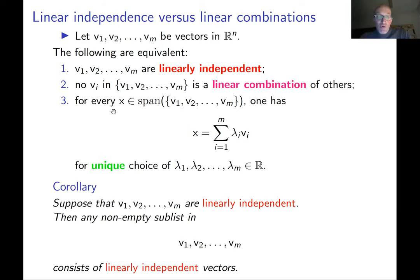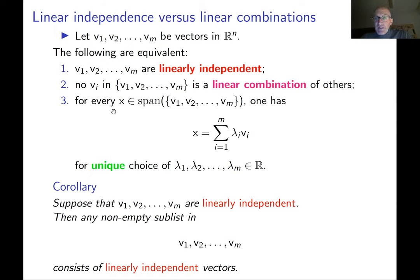This gives a very nice corollary which most people use subconsciously: if you have a collection of linearly independent vectors v1, v2, up to vm, then any sublist of this list also consists of linearly independent vectors. For example, if you drop the last vector, what is left — v1, v2, vm minus 1 — is going to be linearly independent. This follows directly from the definition of linear independence.